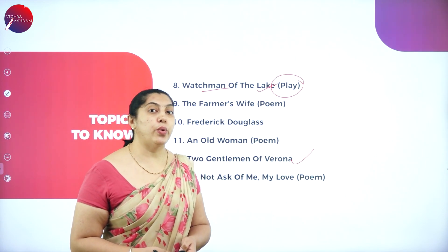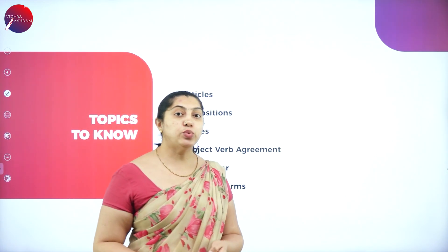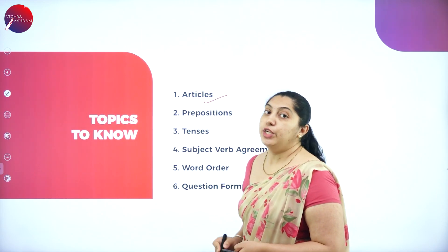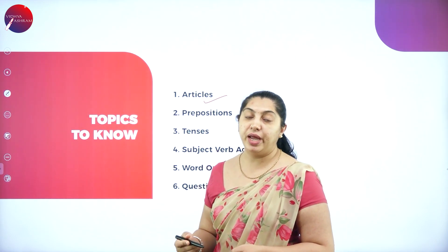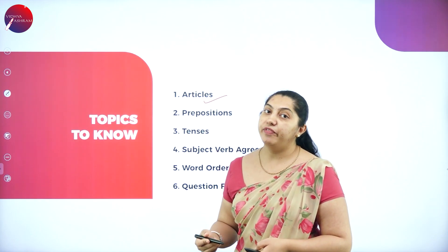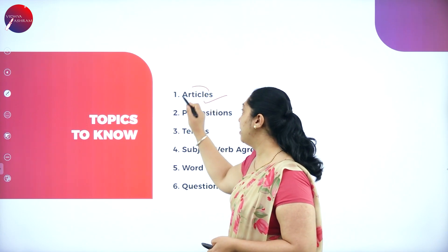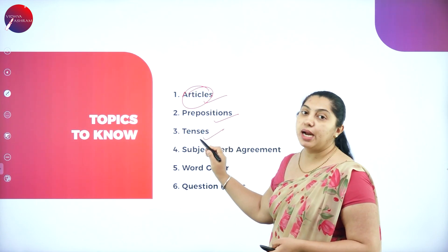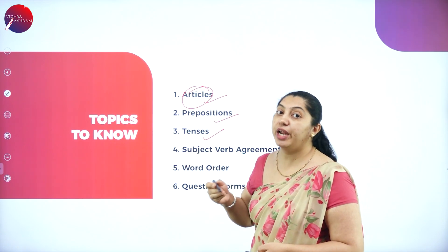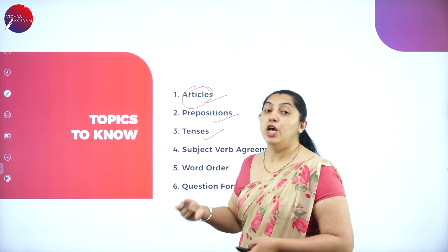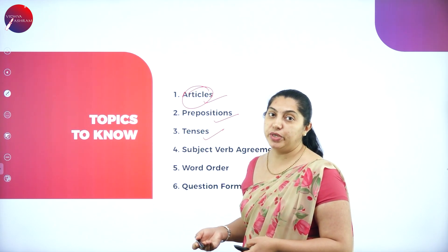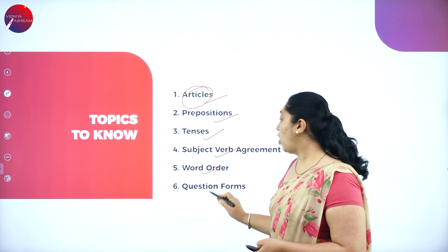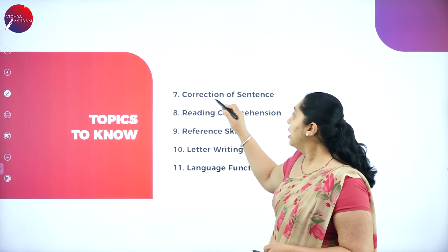Now let's look at the grammar part from the Articulation textbook. The topics include: Articles — definite article 'the' and indefinite articles 'a' and 'an', which you have already studied. Next is Prepositions, then Tenses — present, past, and future, each with four subdivisions. Also covered are Subject-Verb Agreement, Word Order, and Correction of Sentences.